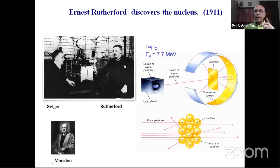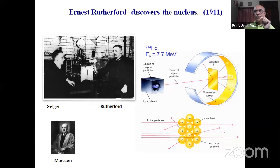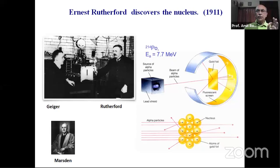Rutherford could understand why this was happening. At that time, atoms were thought to be uniformly filled with positive and negative charges. But Rutherford found that the alpha particles only came back if the positive charge of the atom was concentrated in a very, very small region — about one ten-thousandth of the size of the atom. That means the nucleus sits in the center of the atom and is one ten-thousandth of the atomic size. If you expanded the atom into a household room, the nucleus would be like a grain of sand — the rest is void, with electrons moving around.